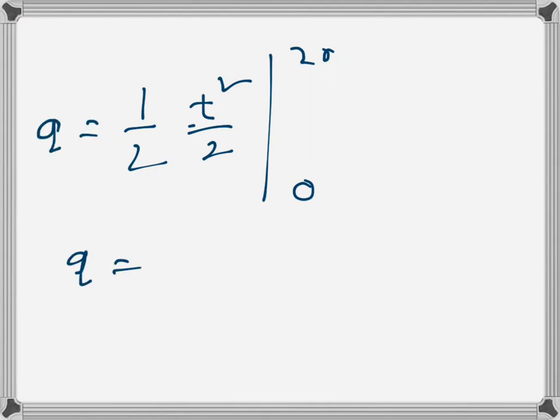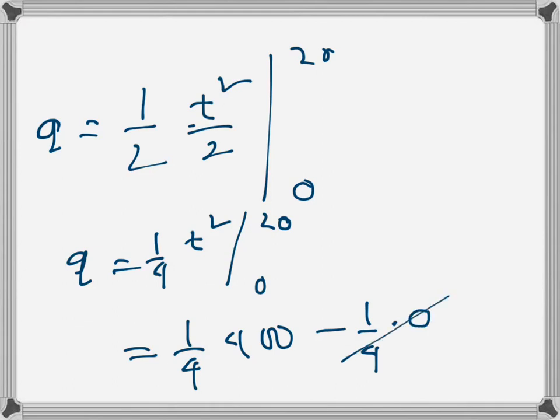So q will be one fourth t square evaluated from 20 to 0, so that will be one fourth times 400 minus one fourth times zero, so this is gone, so that becomes 100, and the unit will be coulomb.